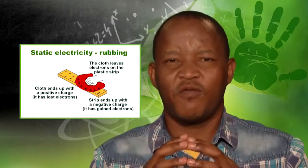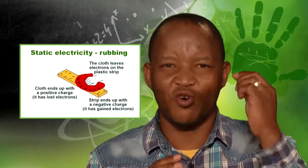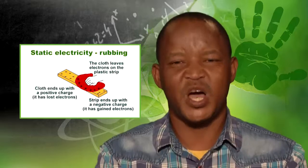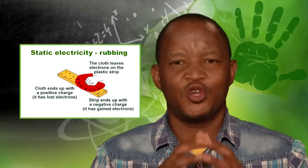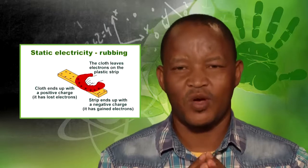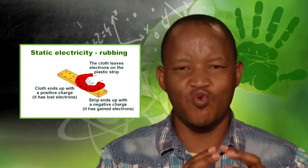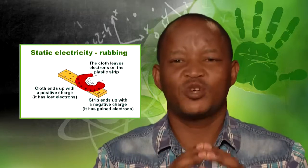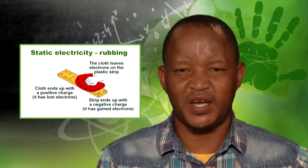Sometimes you have seen that as you rub your pen or ruler on your hair and bring it next to small pieces of paper, the pieces of paper jump to the ruler. As you rub a plastic ruler with a cotton cloth, electrons are transferred from the cloth to the ruler, making the ruler negatively charged and the cloth positively charged. That is how you can charge an object by rubbing.